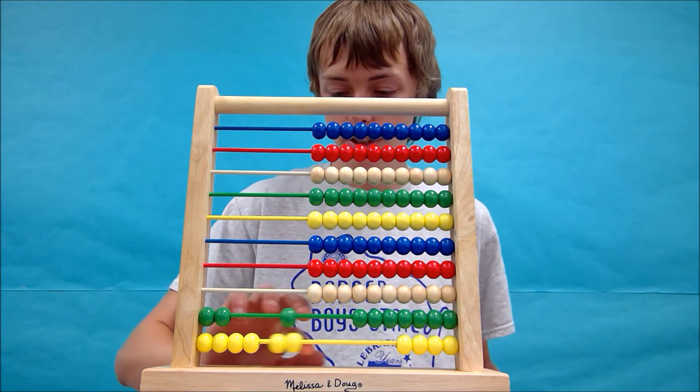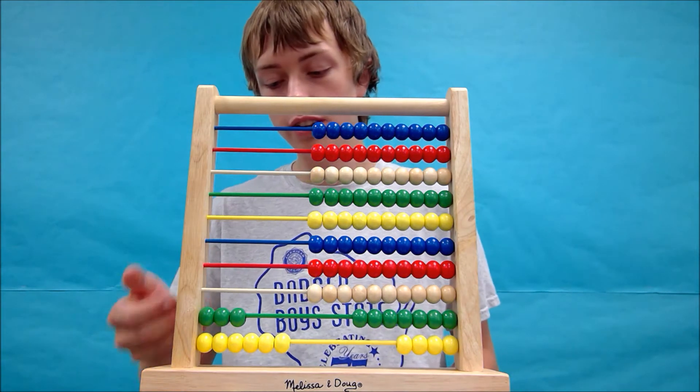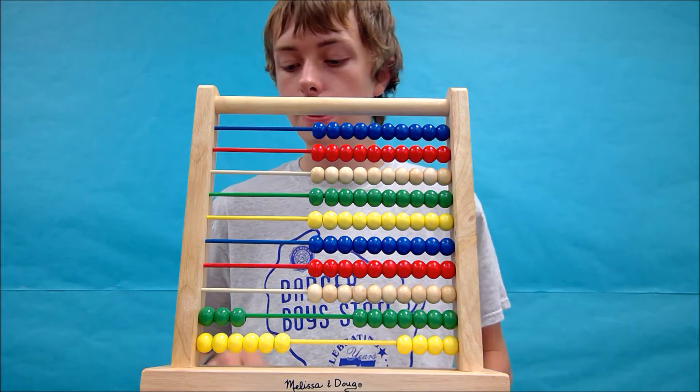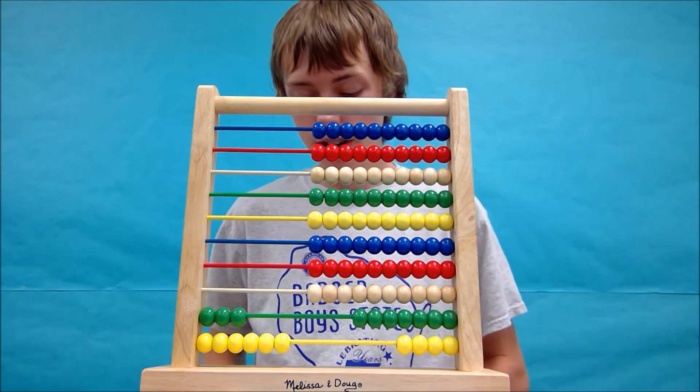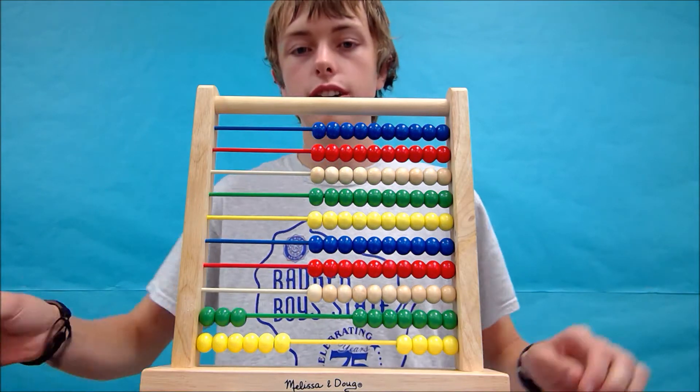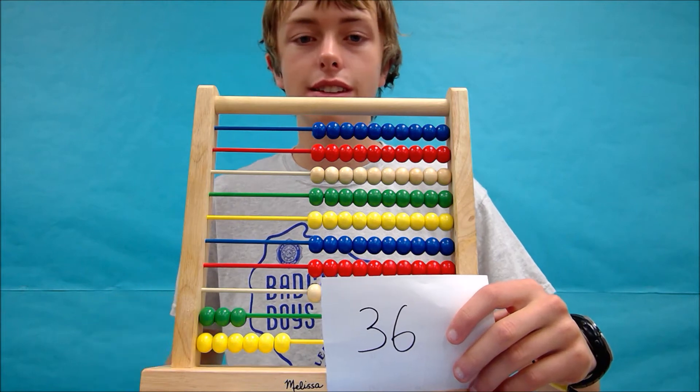So then we slap those two together and I'm going to write down the number. If you can tell what it is from here, you can just put it on your answer sheet or wherever you have to put it, but I'm going to write it down. It is three, six. So our answer is 36 and our abacus should end up looking like this.